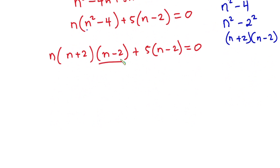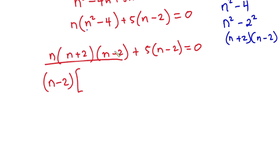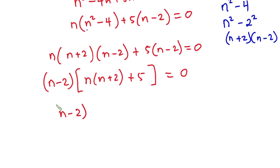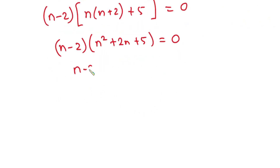We can see we have n minus 2 as a common factor in both terms, so let's take it out. We get n minus 2 times the quantity n times n plus 2 plus 5, which equals n minus 2 times n squared plus 2n plus 5, all equal to 0. So either n minus 2 equals 0, or n squared plus 2n plus 5 equals 0.